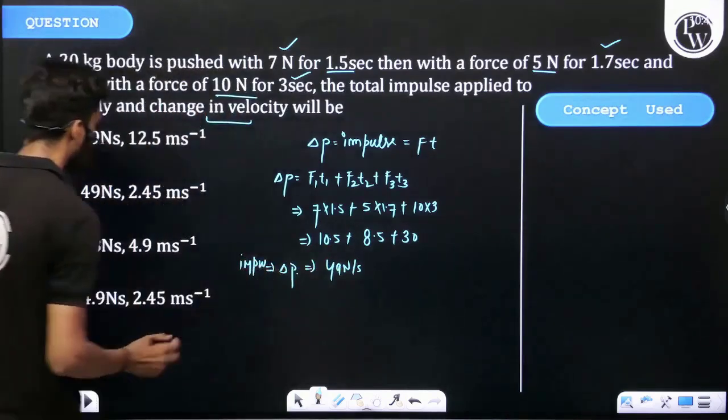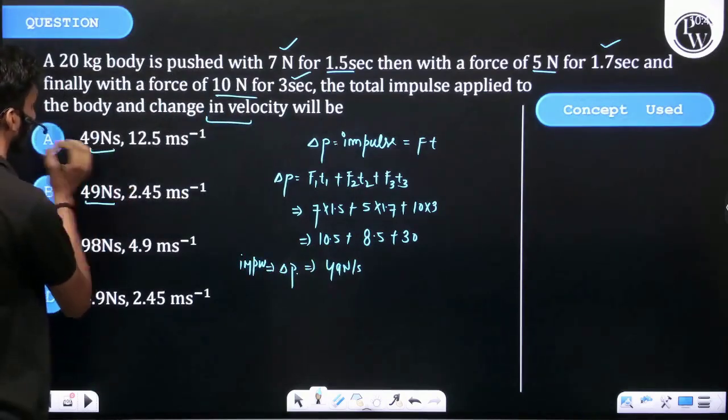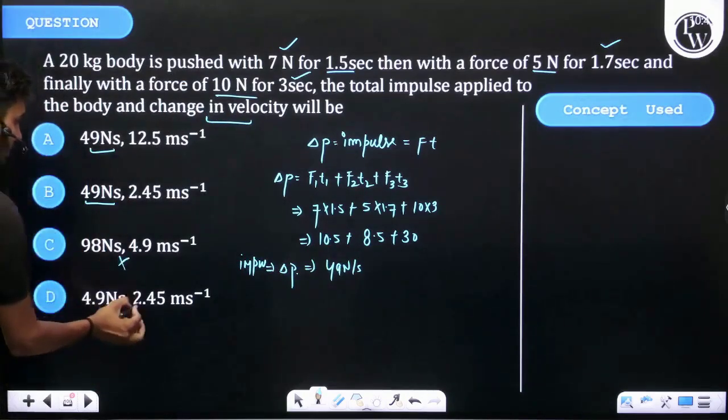Now check the options. 49 Ns—two options are found, the others are wrong.